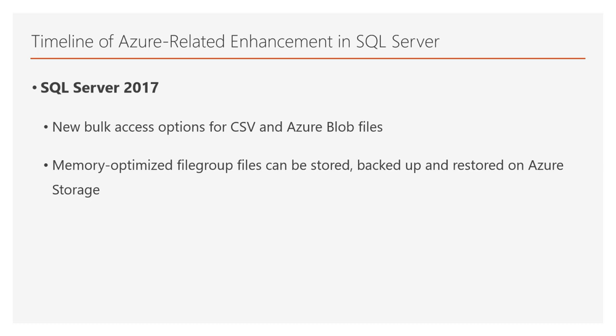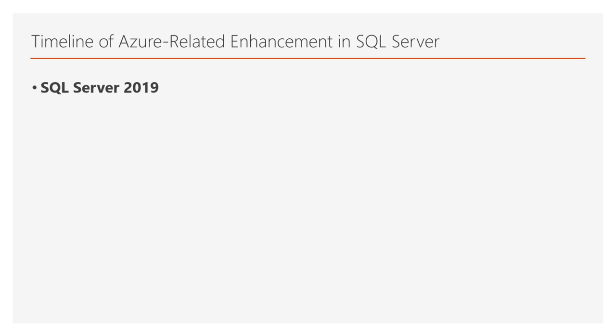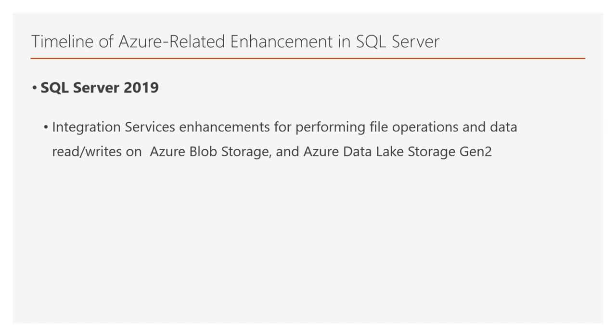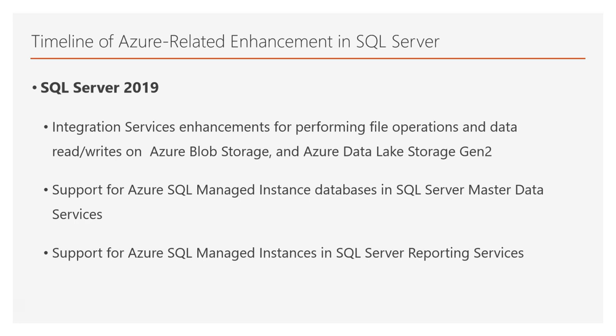In the next release of SQL Server after 2017, which is SQL Server 2019, more Azure integration features were added. These features were Integration Services enhancements for performing file operations and data read-writes on Azure Blob Storage and Azure Data Lake Storage Gen 2, support for Azure SQL-managed instance databases in SQL Server Master Data Services, as well as support for Azure SQL-managed instances in SQL Server Reporting Services. SQL Server 2019 provides even more integration with Azure SQL Database, and more specifically with Azure SQL-managed instance, compared to previous versions such as SQL Server 2016 or 2017.